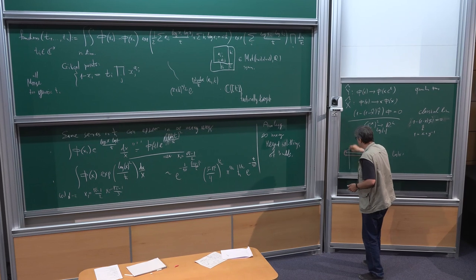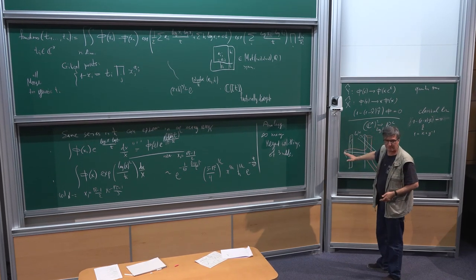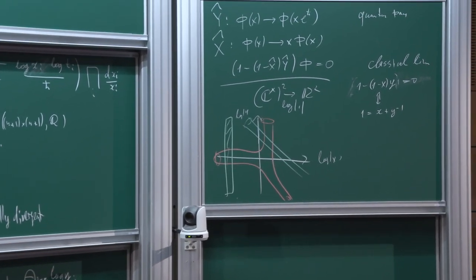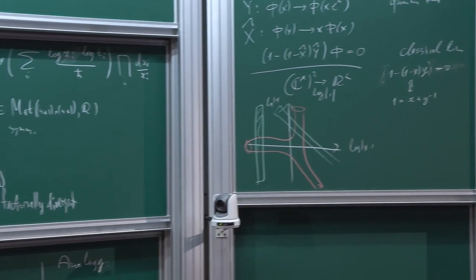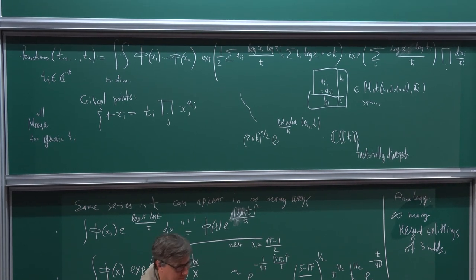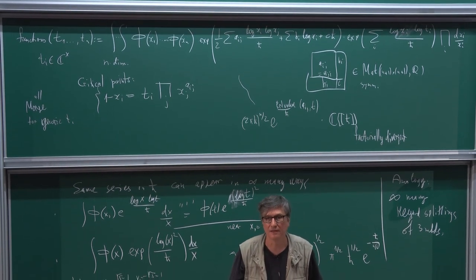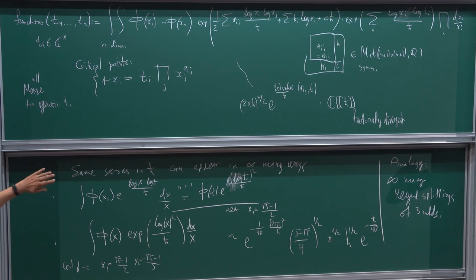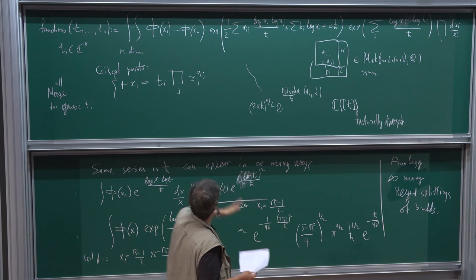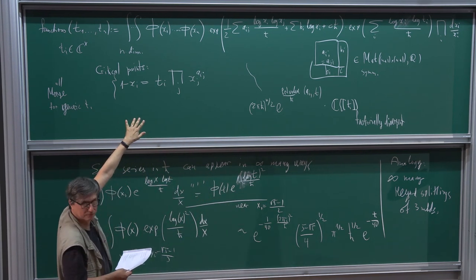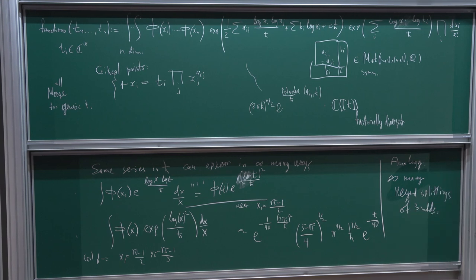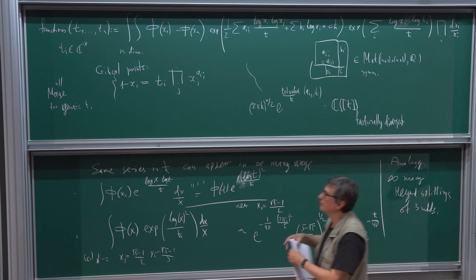One can go to a limiting case: consider something which is not a graph of one form — kind of a delta function in the x variable. We're interested in this limiting case when you replace the A_{ij} by an infinite matrix. What you get: you have just one variable and you get a value of F at a given point. You need two Lagrangians: one Lagrangian is the graph of differential product of F, and it's two Lagrangians. So this expression should be R.